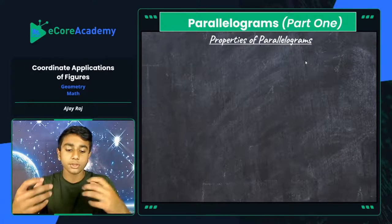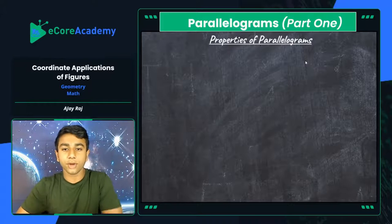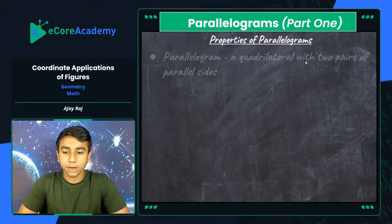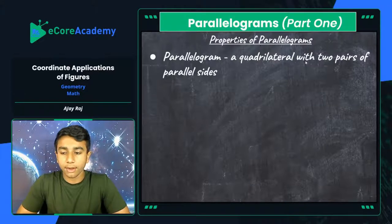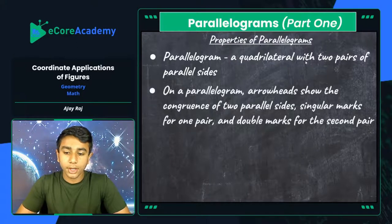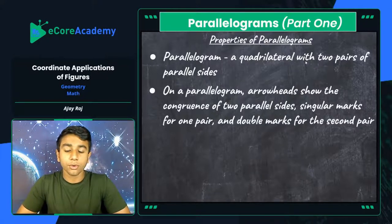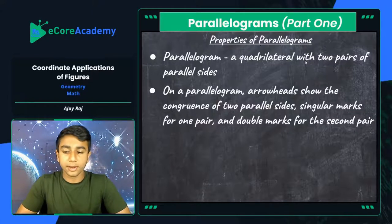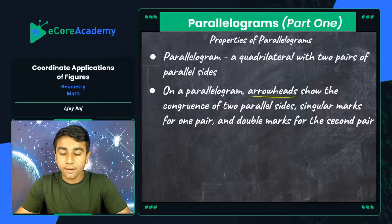We're going to start with parallelograms and trapezoids and then go more specific until we get to triangles. A parallelogram's geometric definition is a quadrilateral — a figure with four sides — that has two pairs of parallel sides. On a parallelogram, arrowheads show the congruence of two parallel sides, meaning the two pairs of parallel sides are always going to be congruent. Singular marks are for one pair and double marks for the second pair.